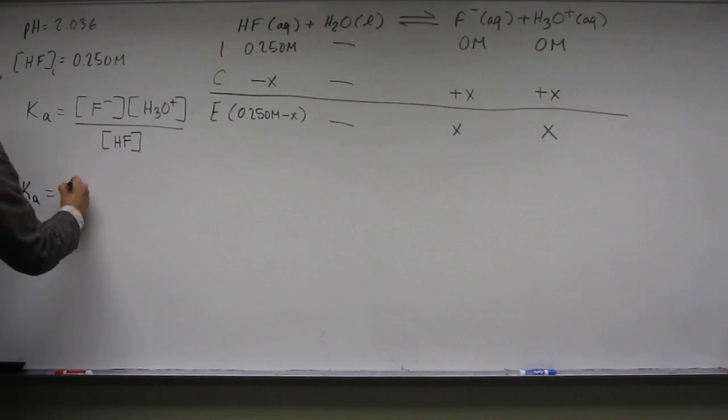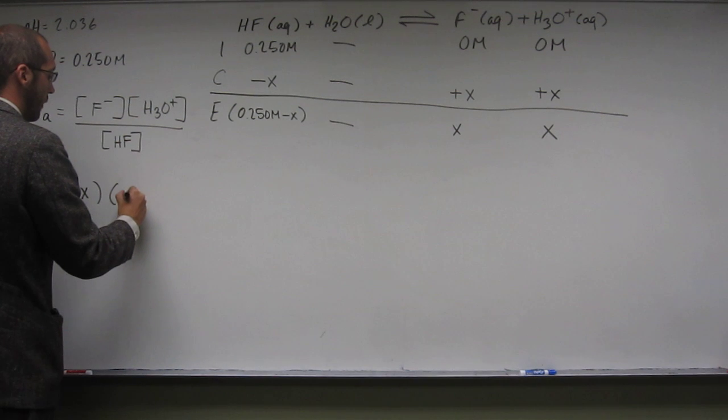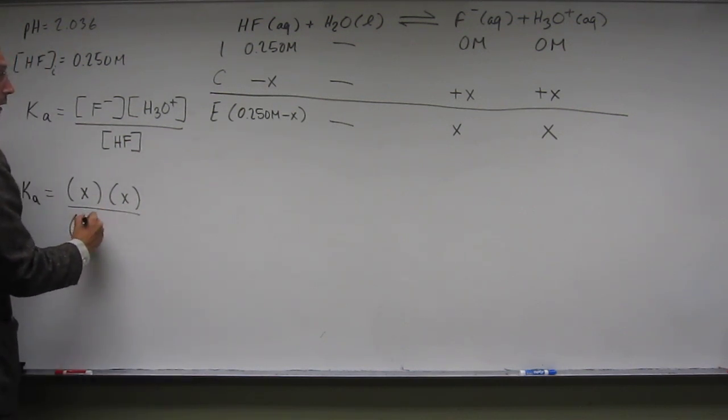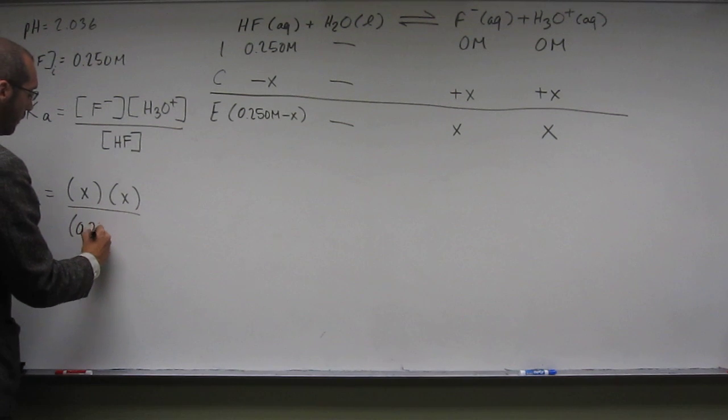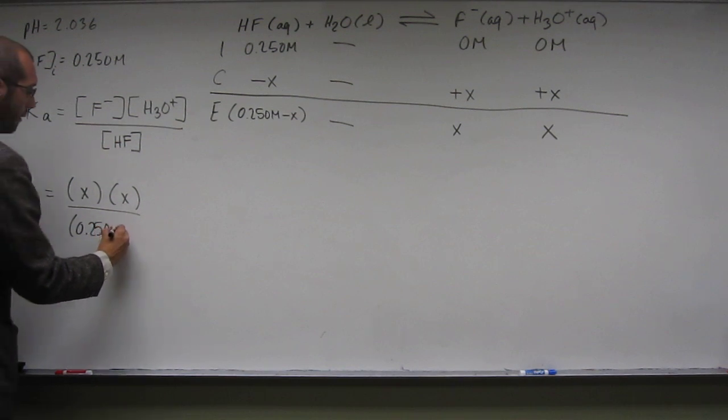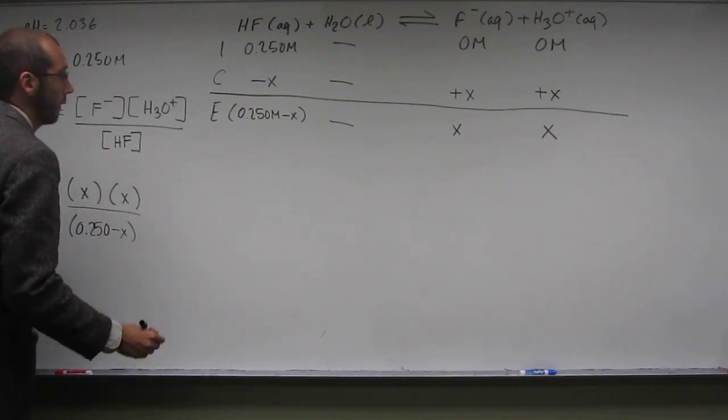So F is set as X, H3O plus is also X, and HF is 0.250. There's no units in Ka, so we'll just not put any minus X.